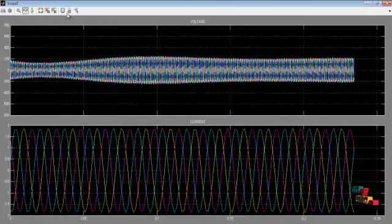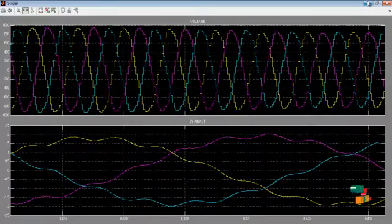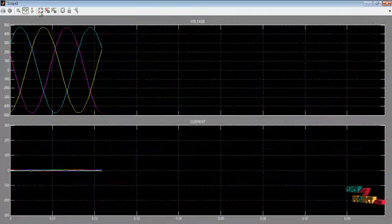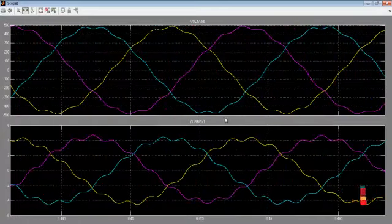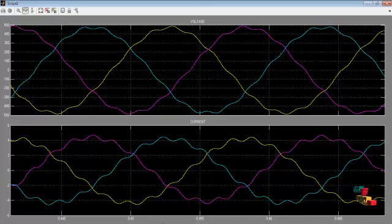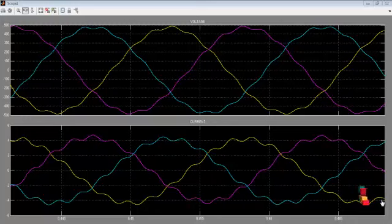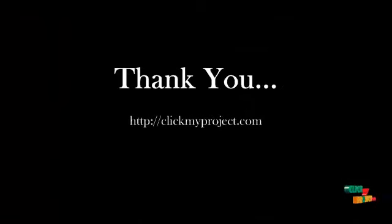And next one is the switching pulses generated using a space vector pulse width modulation technique. And this is the output voltage waveform on the load side, and this is the grid side voltage waveform. Here we see voltage and current waveform, measured from the grid and load side. So the overall output process will be improved using this control technique. Thank you for watching this video.